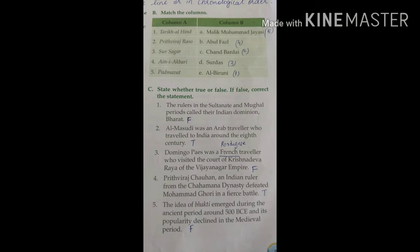Fourth: Prithviraj Chauhan, an Indian ruler from the Chahamana dynasty, defeated Mohammed Ghori in a fierce battle — true. Fifth: the idea of Bhakti emerged during the ancient period of 500 BCE and its popularity declined in the medieval period — answer is false, because the Bhakti movement emerged during the medieval period.